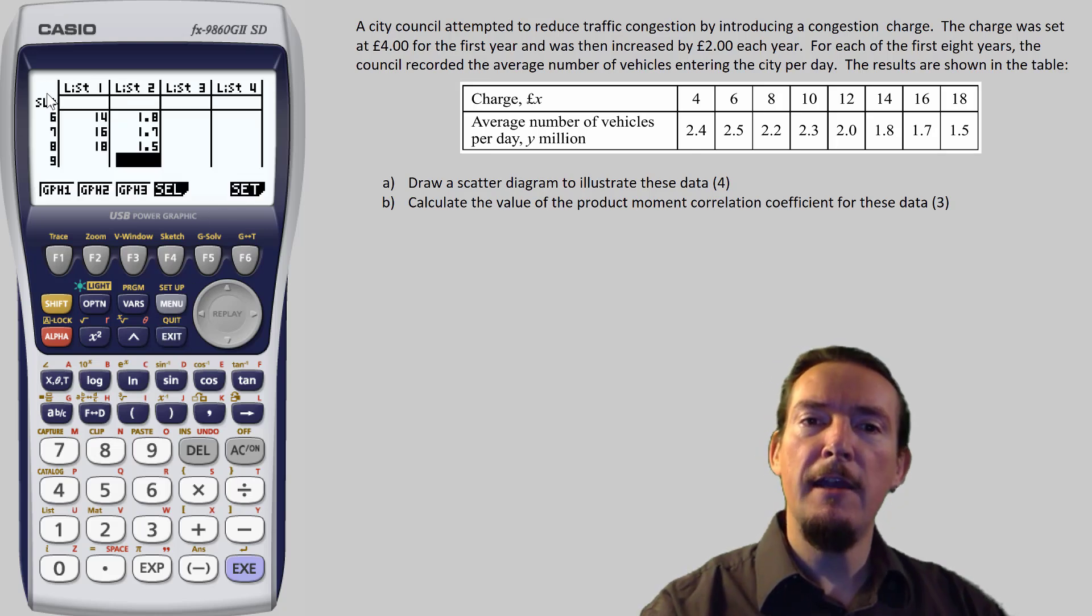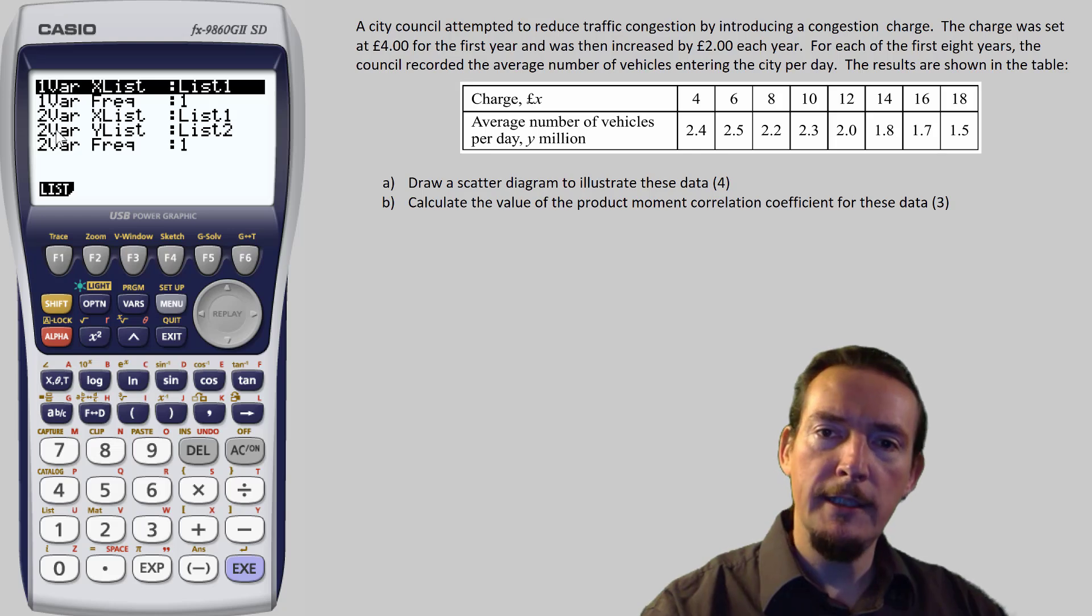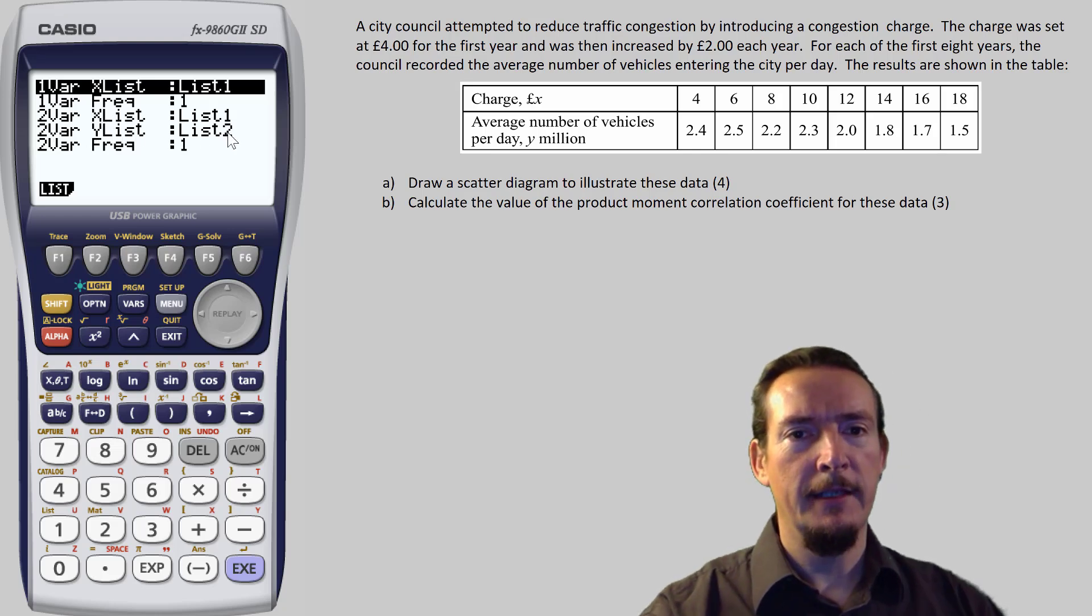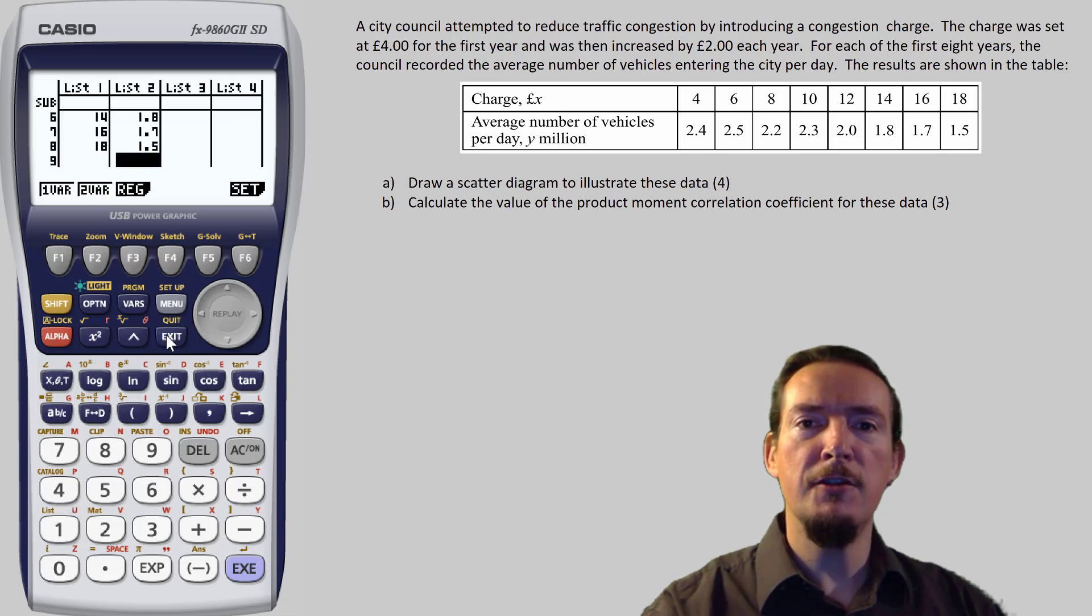Right, let's hit the F2 calc button and quickly check Set to make sure we are configured correctly for bivariate data. Check that the 2var xlist points to list 1, and that the 2var ylist points to list 2. If it doesn't for some reason, you can press the List button and set it correctly. Once you are happy that this is all correct, press Exit followed by F2 2var to see what numbers we get.